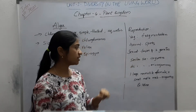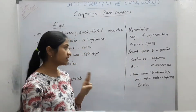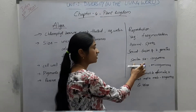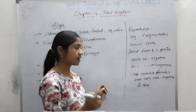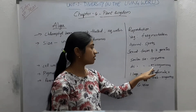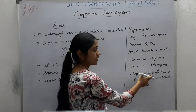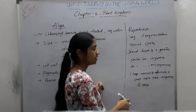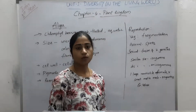Sexual reproduction takes place through fusion of two gametes, and it is of different types. If the gametes are of similar size and they fuse, it is called isogamous. If two gametes of dissimilar size fuse, it is called anisogamous. If one gamete is a large non-motile female and another is a small motile male gamete, it is called oogamous. An example of this is Volvox.